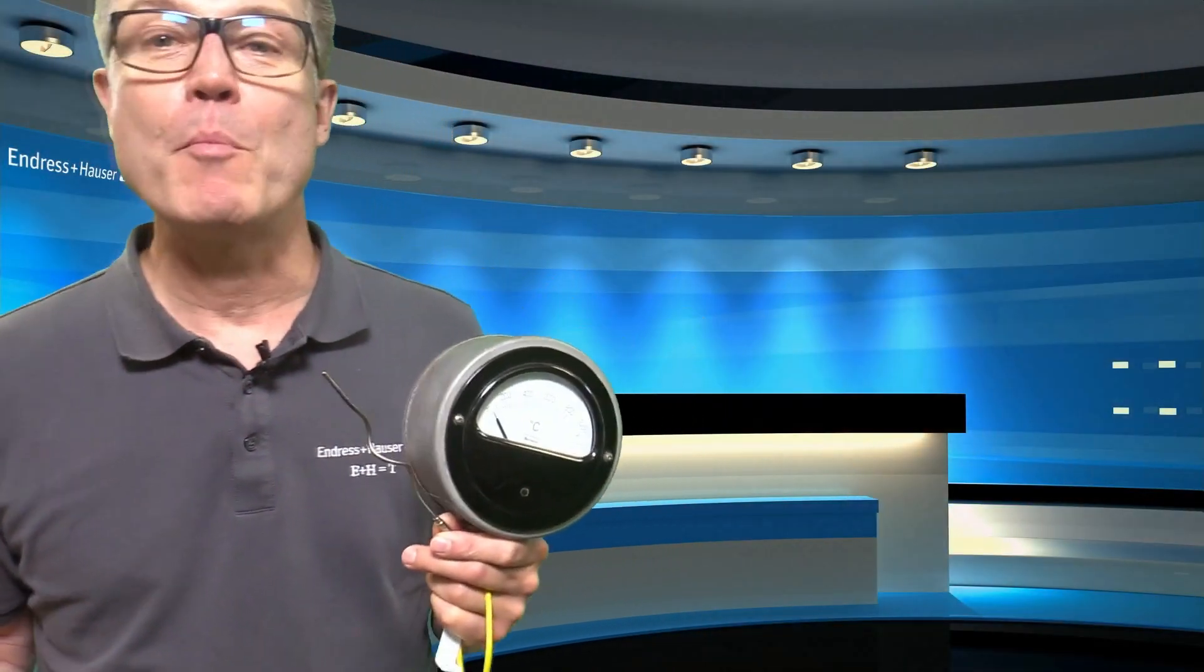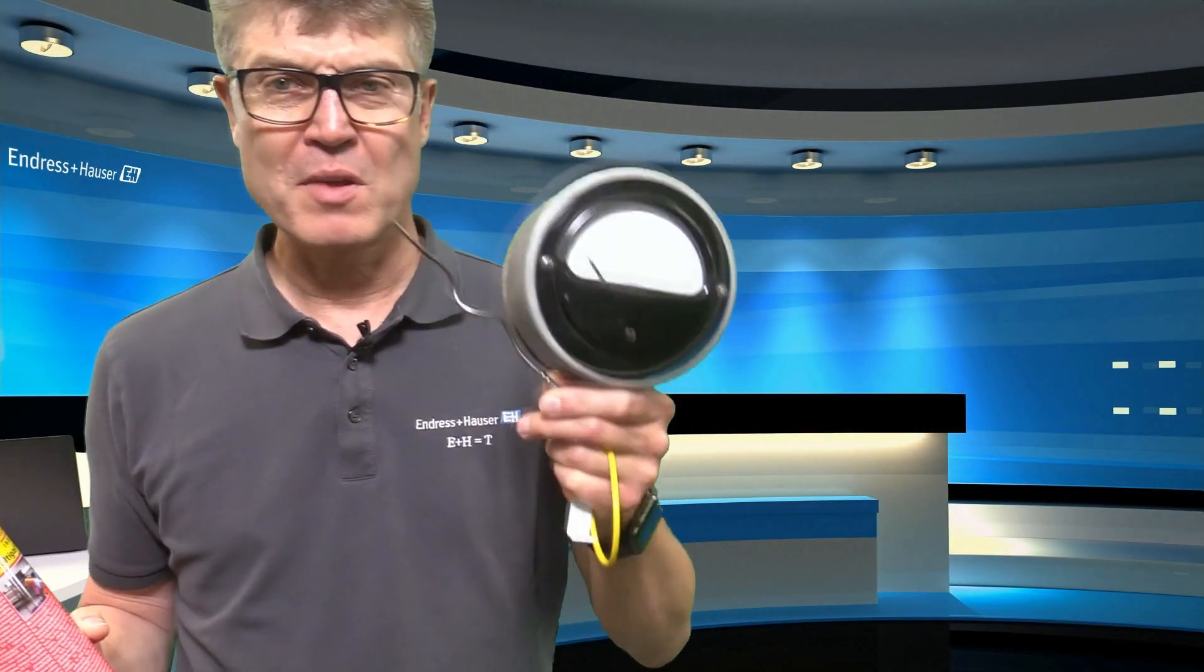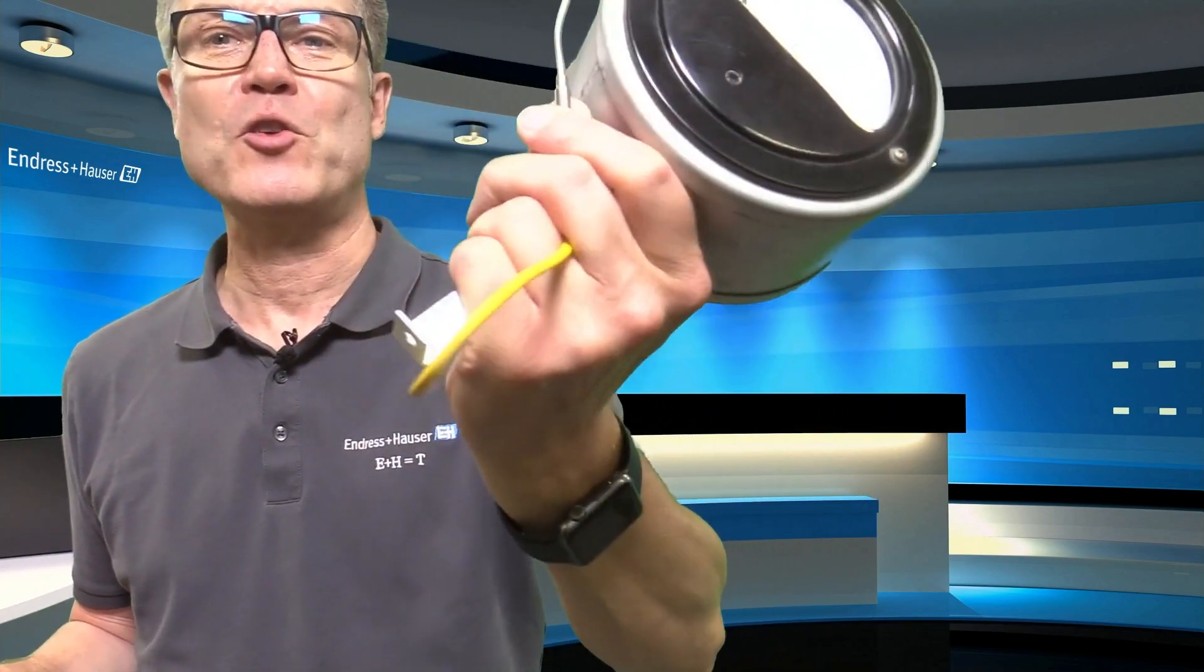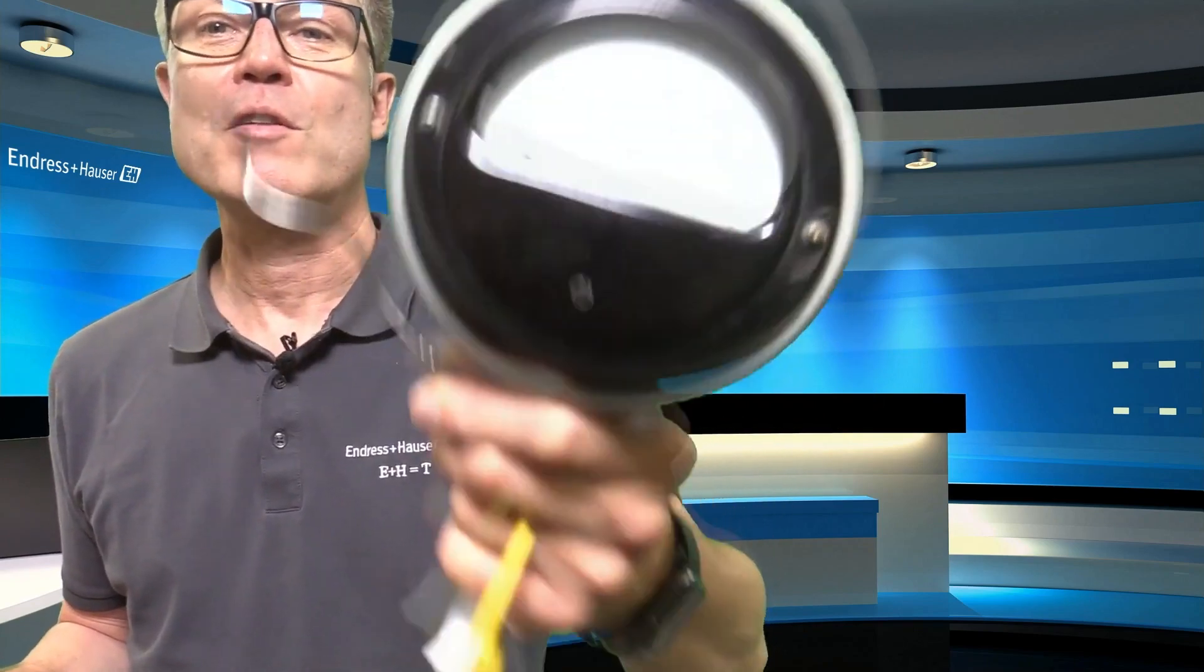High temperature means above 600 degrees Celsius. They are quite easy. You see here in this antique measurement instrument, there's no battery, there's nothing. Just a thermocouple.